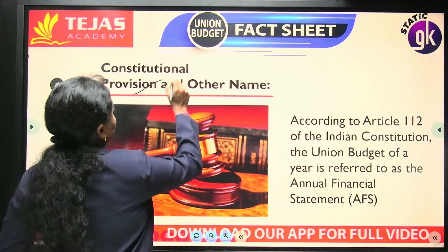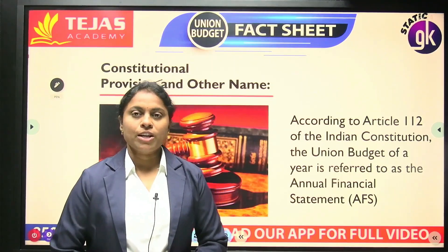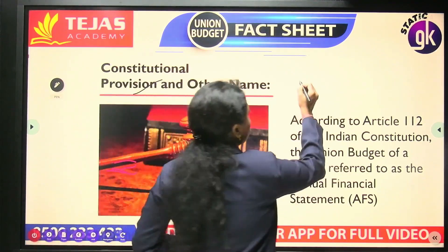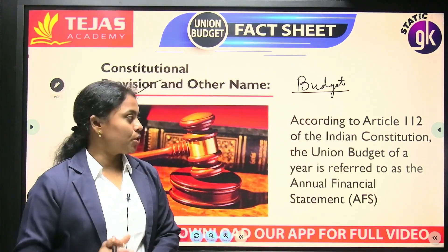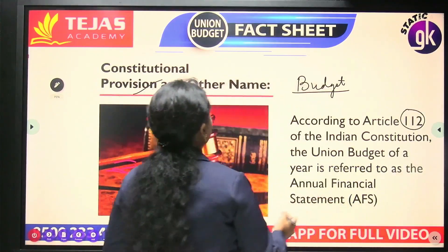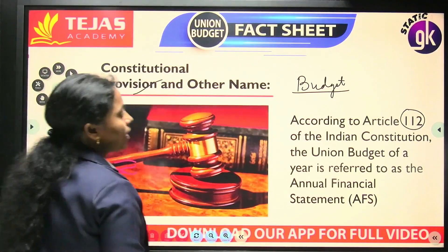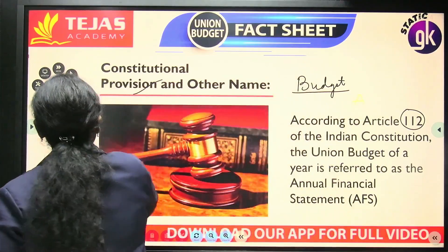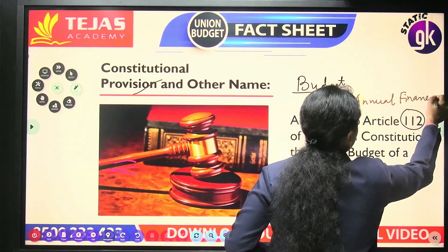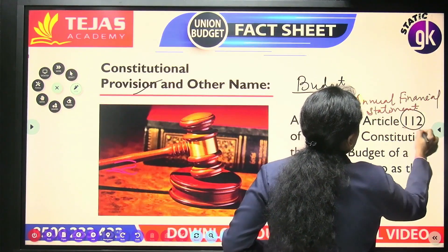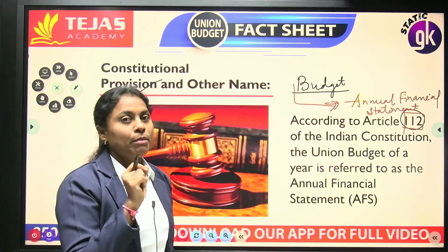First, the constitutional name for the budget. We know that every year in the month of February, in the first week, there is a tradition of introducing the budget. We always use the word 'budget,' but there is no term called 'budget' in our constitution. In our constitution, there is an article called Article 112, which speaks about the 'Annual Financial Statement.' Annual financial statement is nothing but the budget. Article 112 talks about the annual financial statement, which is nothing but the budget, but directly the word 'budget' is not there in the constitution.